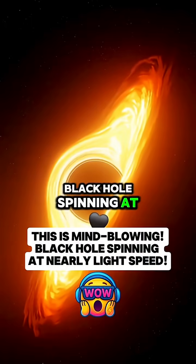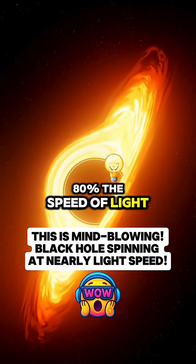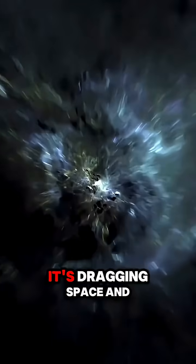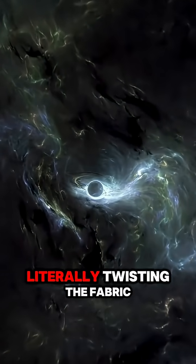NASA just found a black hole spinning at 80% the speed of light, and if you think that sounds fast, it's worse than you think. Because this thing isn't just spinning, it's dragging space and time around with it, literally twisting the fabric of reality.